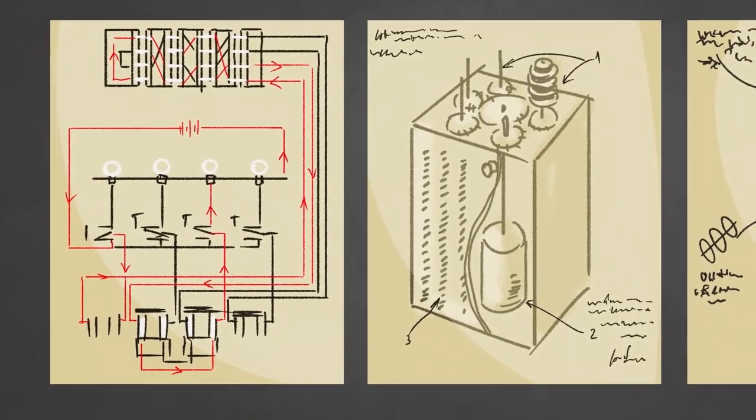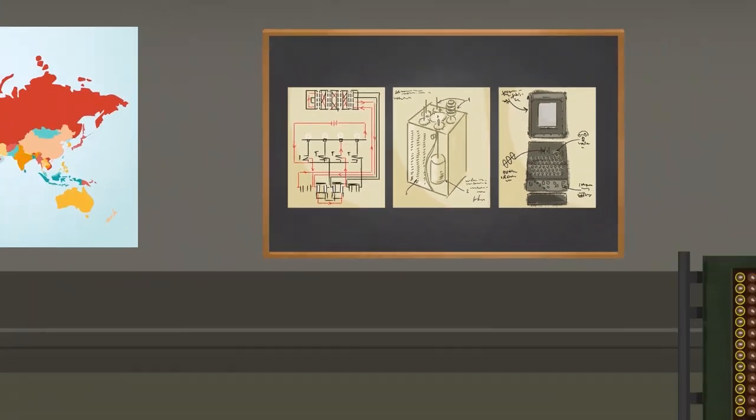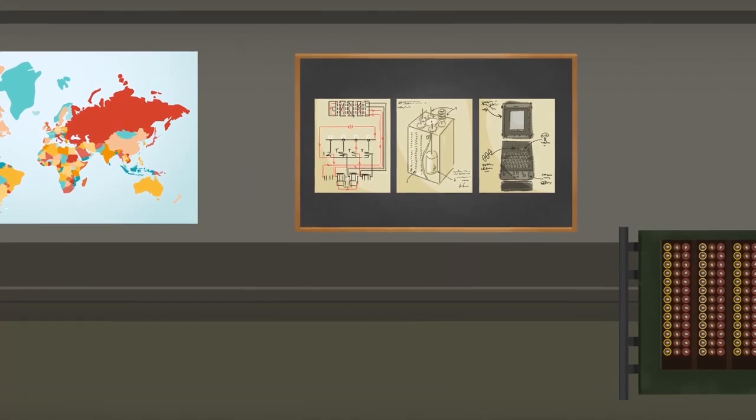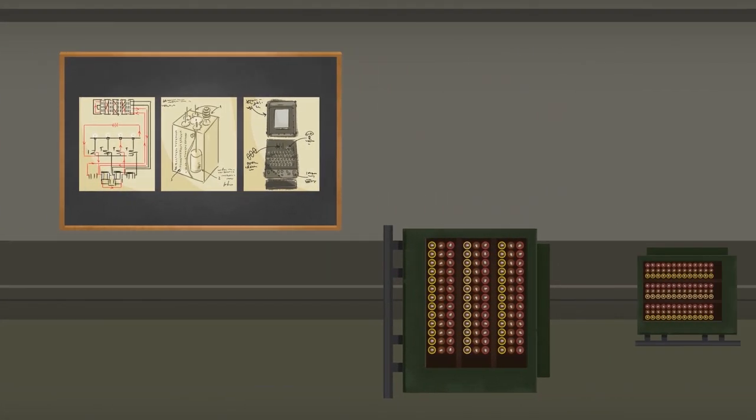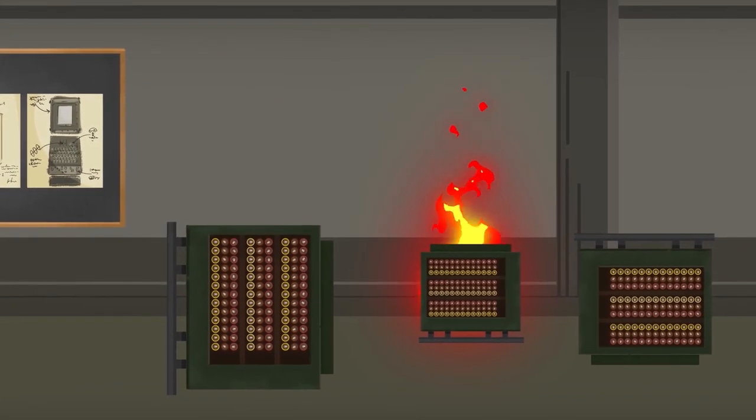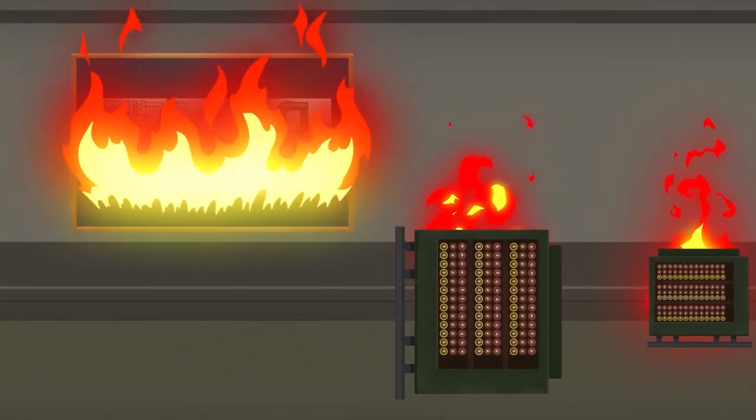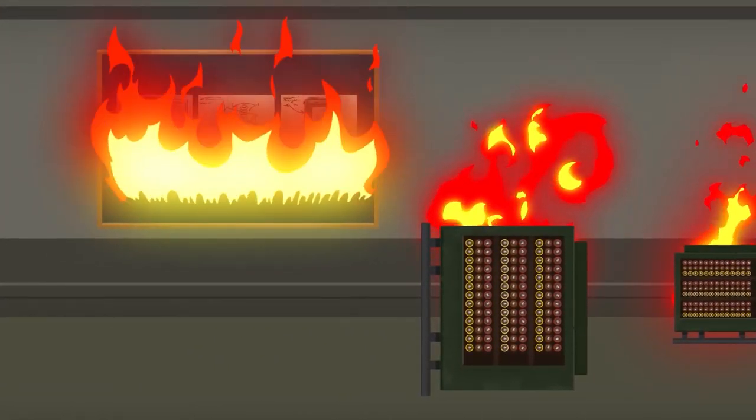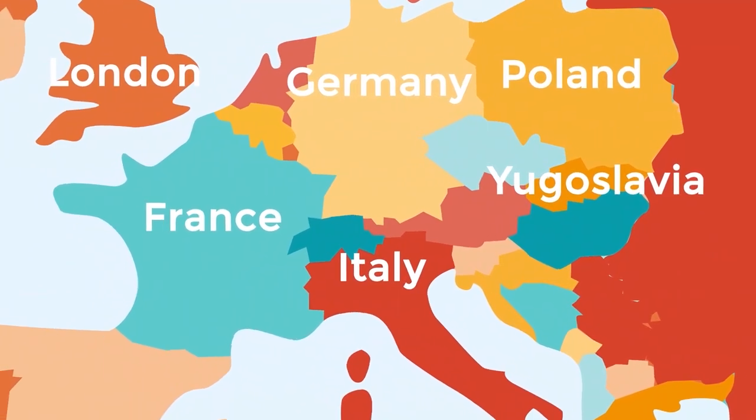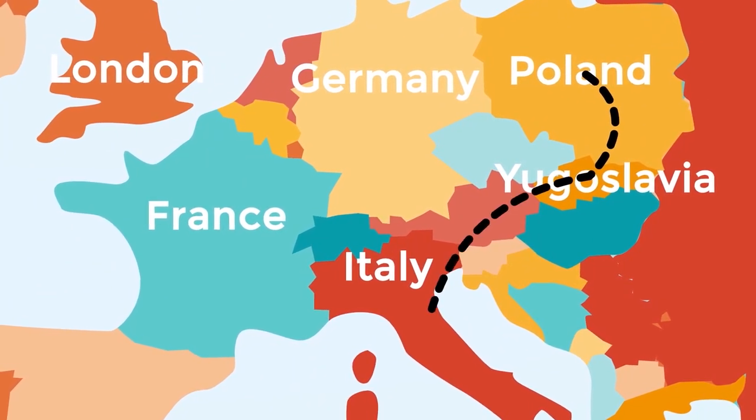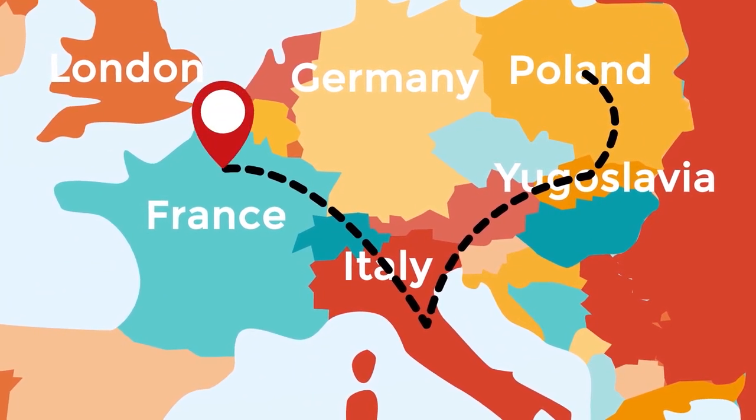On September 1, the German army invaded Polish territory. Four days later, the entire team of the Bureau of Ciphers was ordered to flee the country, having destroyed all evidence of work on Enigma before that. They were evacuated to Romania, then to Yugoslavia, and then Italy. And through Italy, they arrived in France.